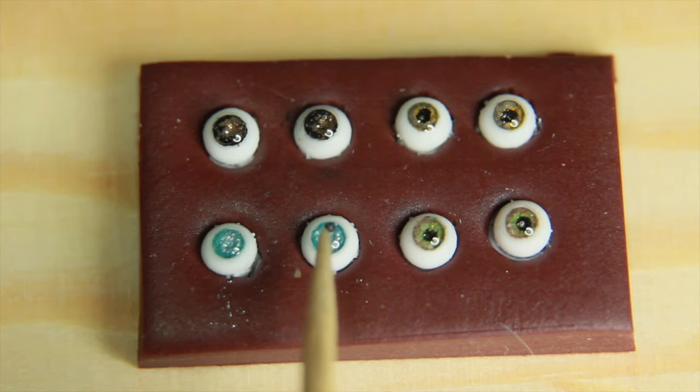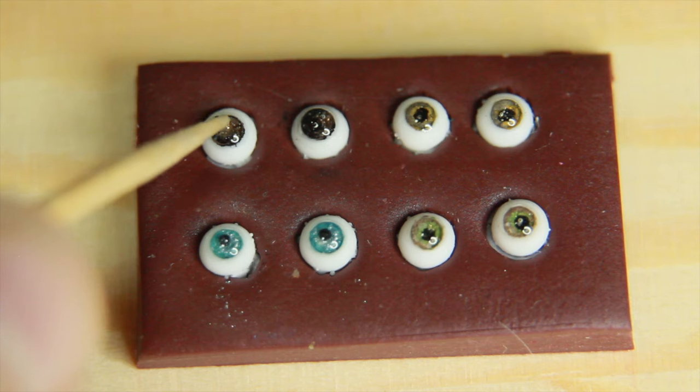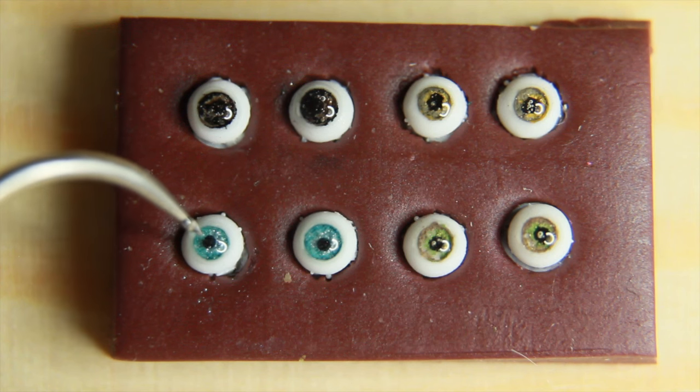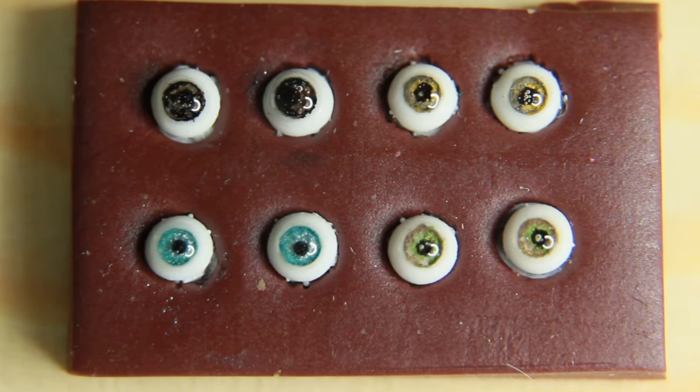And as another option for the pupils, you can add black microbeads on the center of the eye after adding the resin. Make sure to centralize them and let them sit in the little hole that is already on the texture.